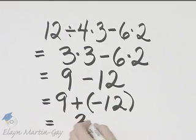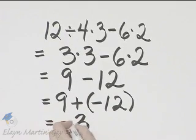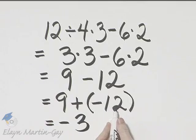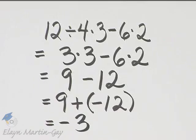12 minus 9 is 3. And I keep the sign of the number with the larger absolute value. Negative 12 has the larger absolute value. The answer is negative 3.